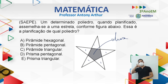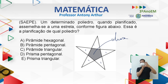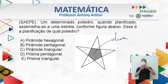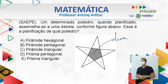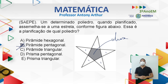Um sólido que tem ponta ou é uma pirâmide ou é um cone. Como não tem parte arredondada, só nos resta a pirâmide. Hexagonal, pentagonal ou triangular? Isso depende da base. Qual é o polígono que está na base dessa figura? Um pentágono. Logo, ela é uma pirâmide pentagonal — alternativa letra B.